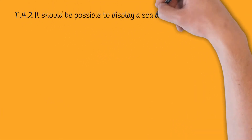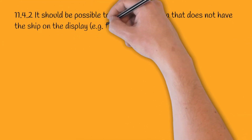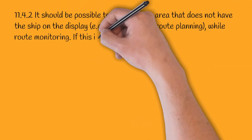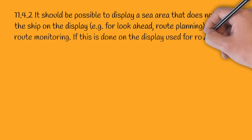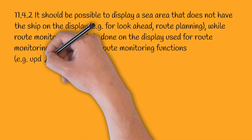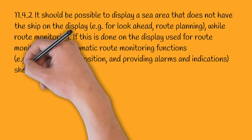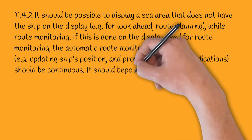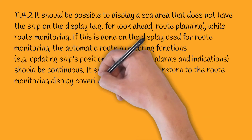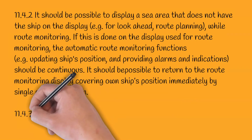11.4.2. It should be possible to display a sea area that does not have the ship on the display, for look-ahead route planning while route monitoring. If this is done on the display used for route monitoring, the automatic route monitoring functions — updating ship's position and providing alarms and indications — should be continuous.